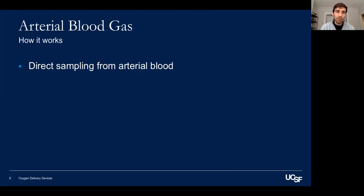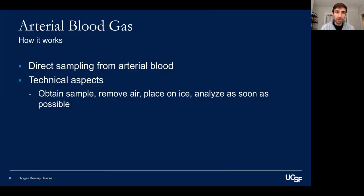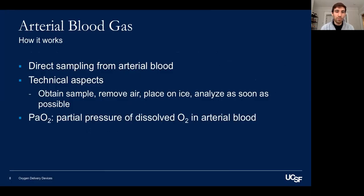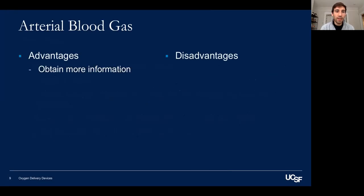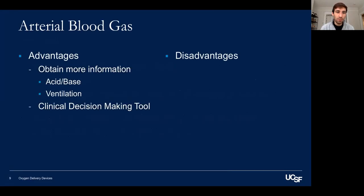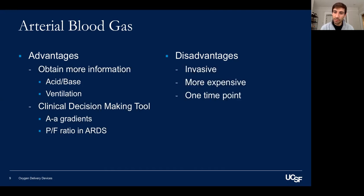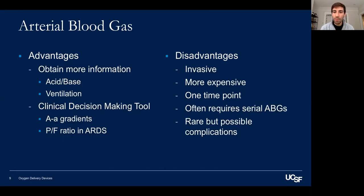Arterial blood gas is performed by directly sampling arterial blood. There are technical aspects involved to ensure accuracy, and it measures the partial pressure of dissolved O2 in arterial blood, along with other outputs. The advantages are that it provides more information on acid-base status and ventilation via CO2, and aids clinical decision-making tools such as calculating A-a gradients, P/F ratios, and ARDS criteria. Disadvantages are that it's invasive, more expensive, provides only one time point, and carries rare but possible complications.